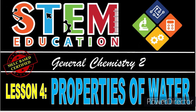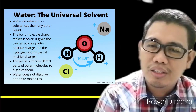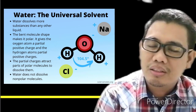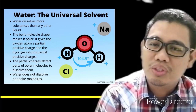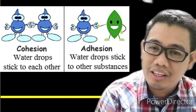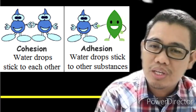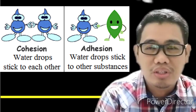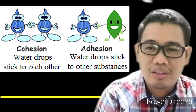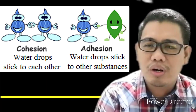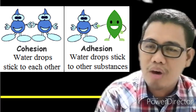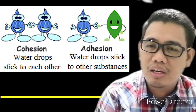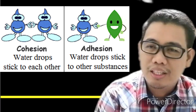Lesson number four is all about the properties of water. Water is considered to be a universal solvent. We have different properties of water like cohesion and adhesion. Cohesion involves the same particle — water to water — they stick together. That is why we have a network cage of water molecules, so there is a cohesive force.